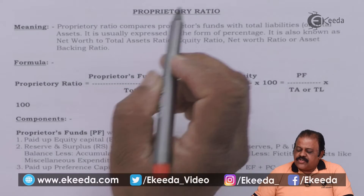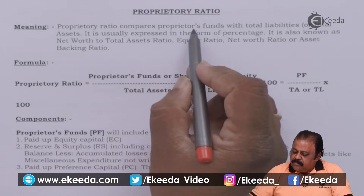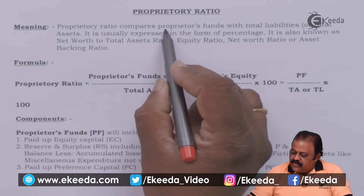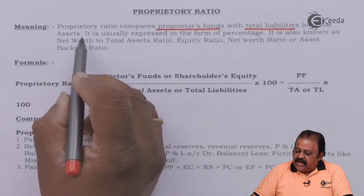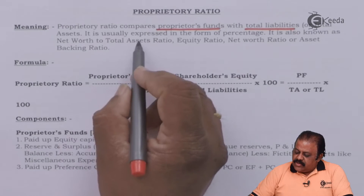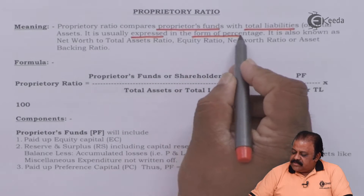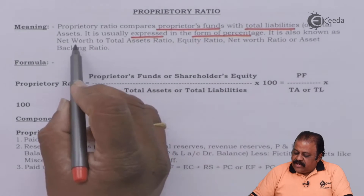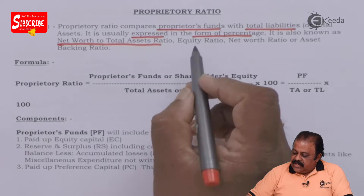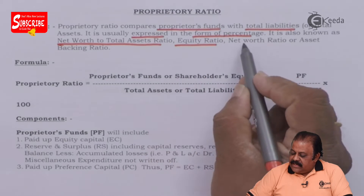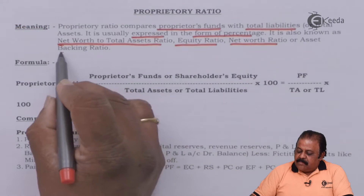Proprietary ratio compares proprietors' fund with the total liabilities or total assets. It is usually expressed in the form of a percentage. It is also known as net worth to total assets ratio, equity ratio, net worth ratio, or asset backing ratio.